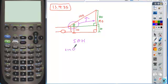So we know that the sine of that unknown angle is equal to the ratio of the opposite side, which is 80, over the hypotenuse, which is 100.